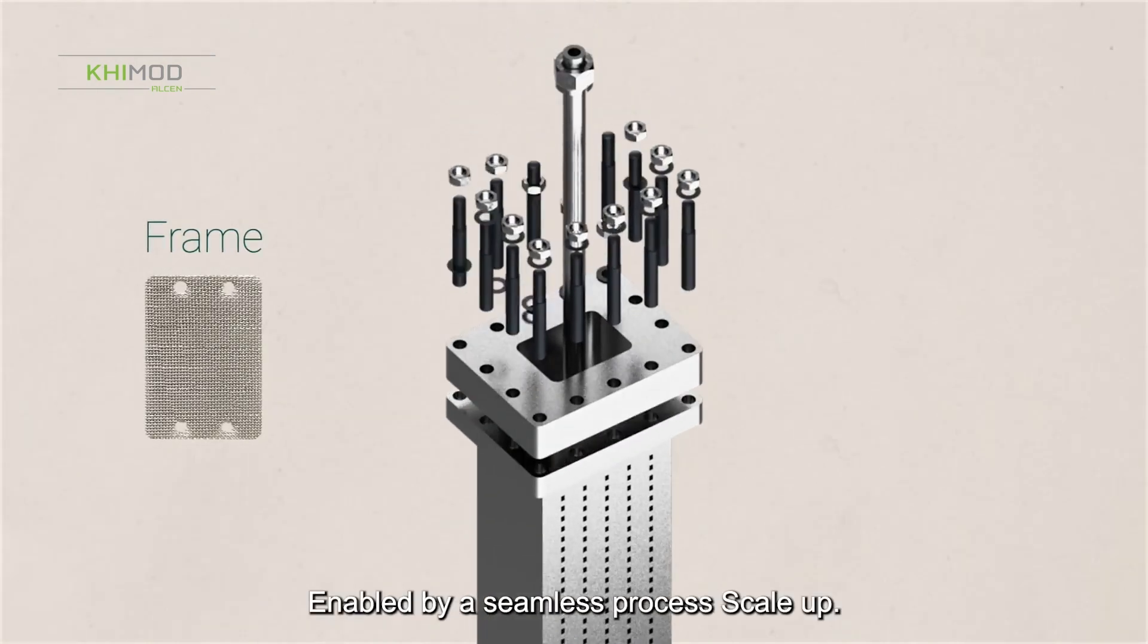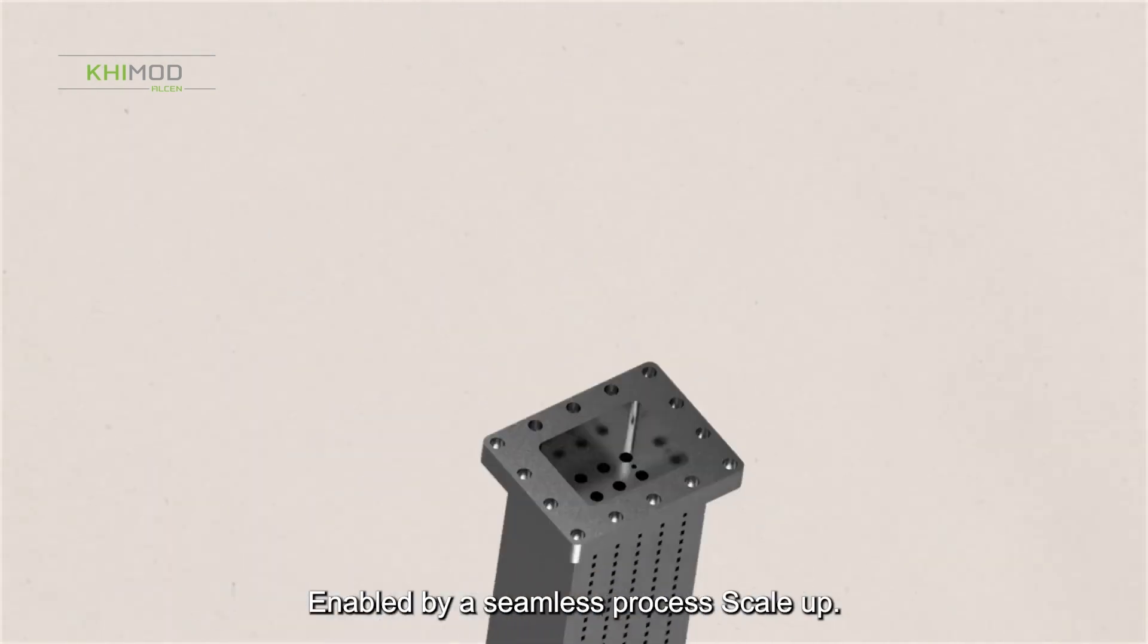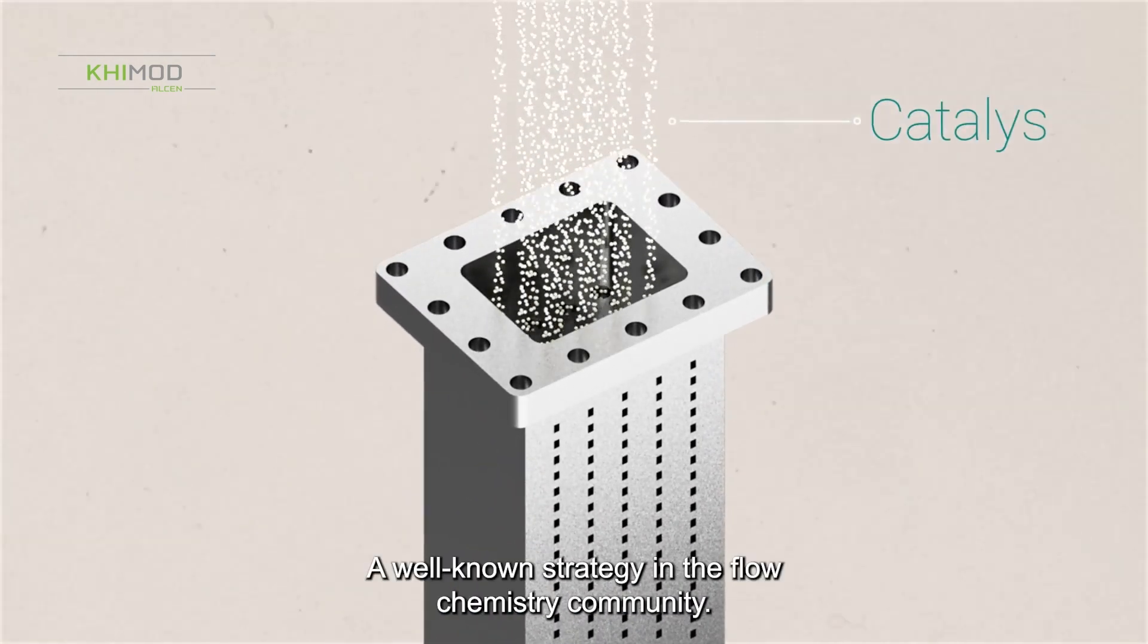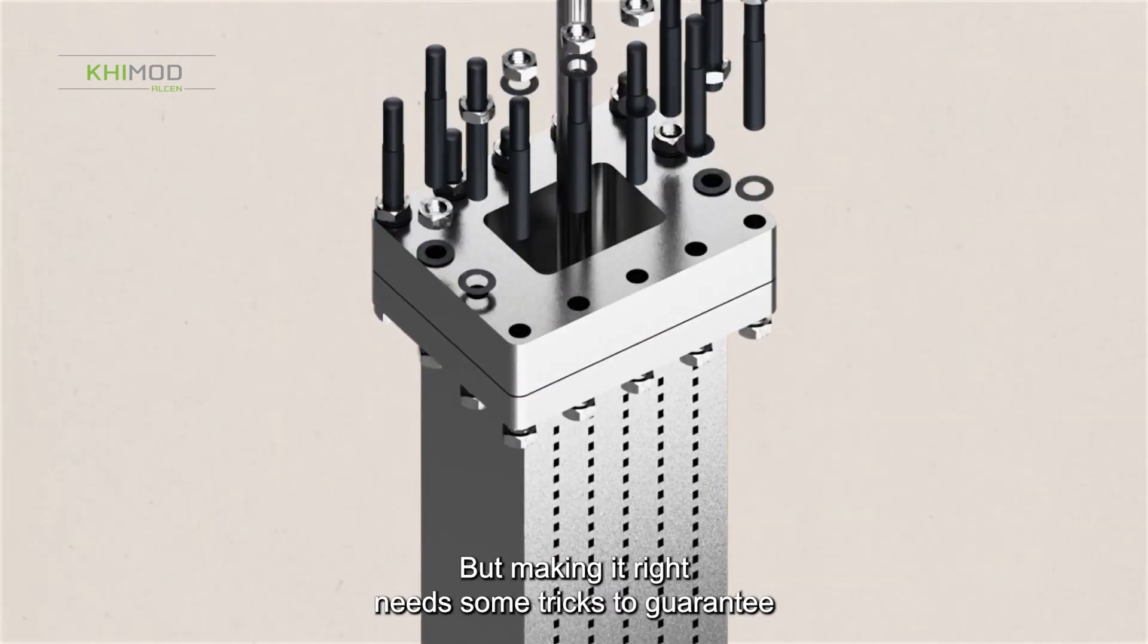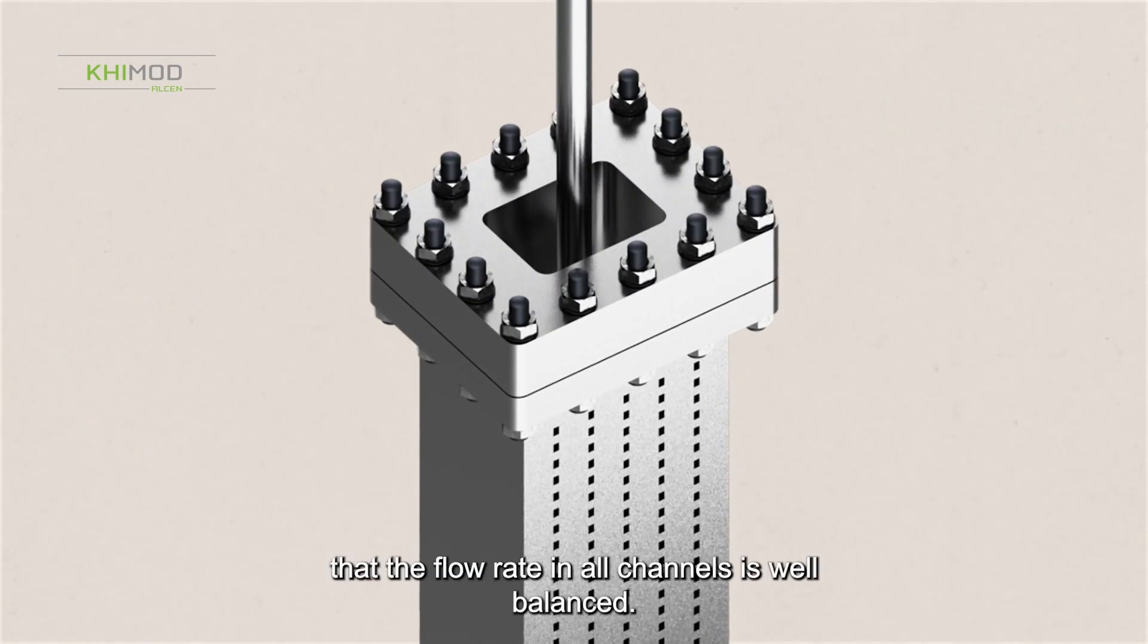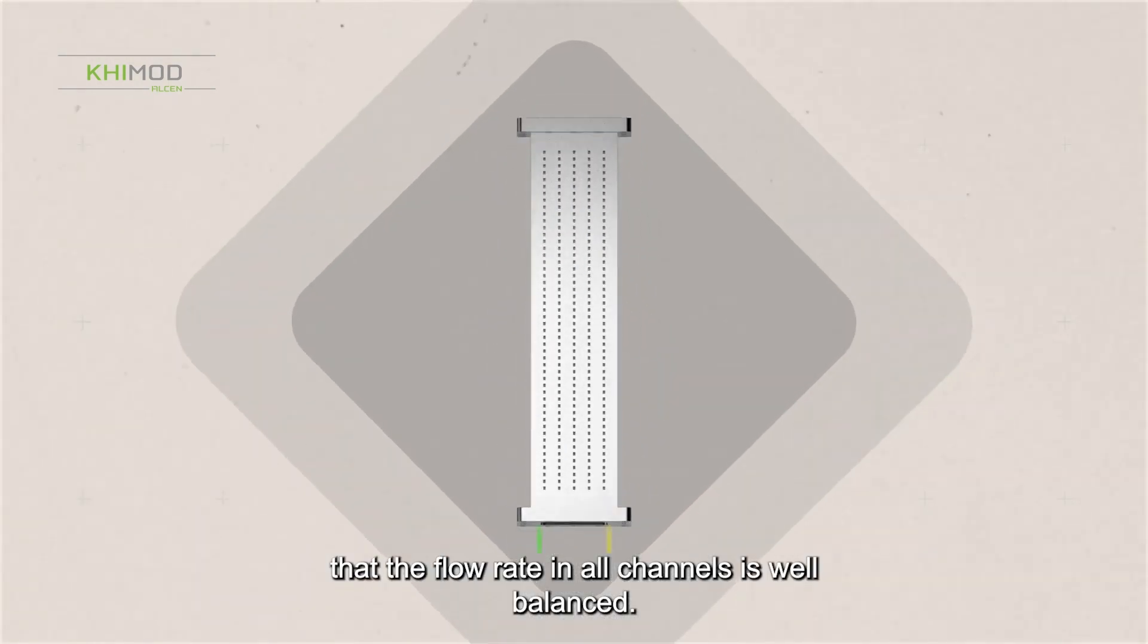Shorter time to market, enabled by a seamless process scale-up. Numbering up, a well-known strategy in the Flow Chemistry community. But making it right needs some tricks to guarantee that the flow rate in all channels is well balanced.